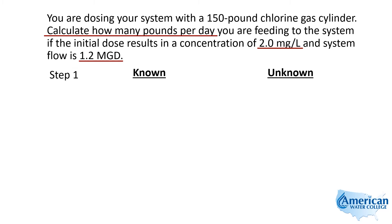So let's write that down with our known and unknown information. Our unknown is pounds per day, and we know that our dose is 2 milligrams per liter and the flow is 1.2 MGD. That's step one.